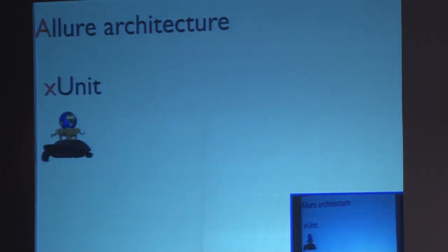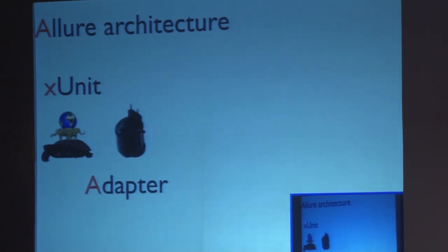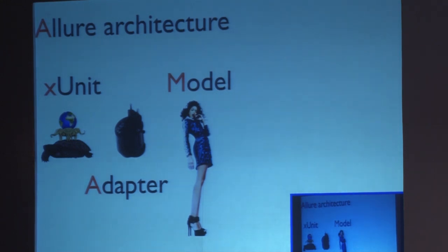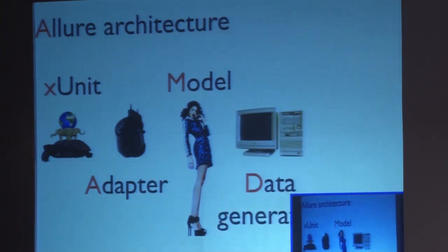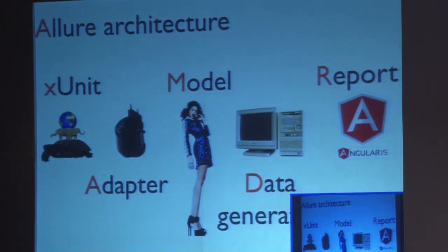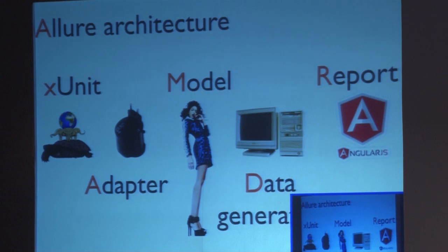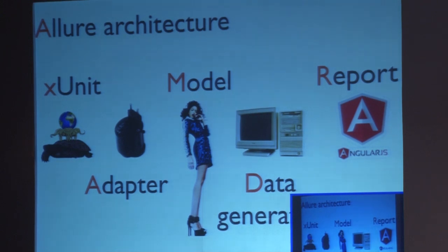The Allure architecture starts with XUnit data, then with the help of the adapter we add additional data to get the Allure model, which is processed by the data generator to transform the XML into JSON, and finally the report is created. The beautiful thing about this architecture is you can replace every part of the chain except the model. If your framework doesn't provide standard XUnit output, you can make it yourself. If you don't like the report UI we created, you can build your own based on the data we provide.